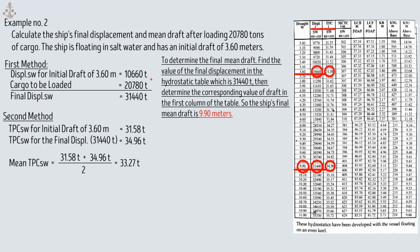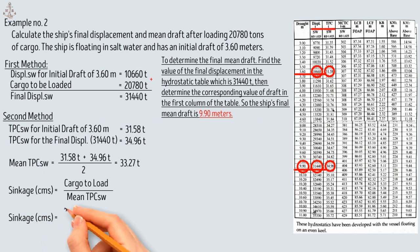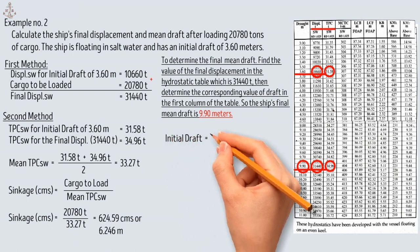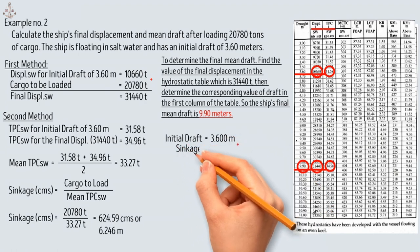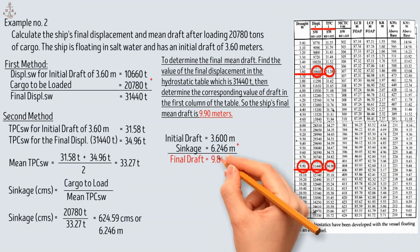Next, determine how many centimeters the draft will increase after loading 20,780 tons of cargo. Sinkage in centimeters equals cargo to load divided by mean TPC: 20,780 tons divided by 33.27 tons equals 624.59 centimeters, or 6.246 meters. To find the final draft, add the sinkage to the initial draft: 3.60 meters plus 6.246 meters gives a final draft of 9.846 meters.